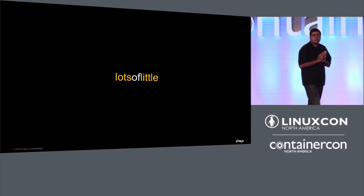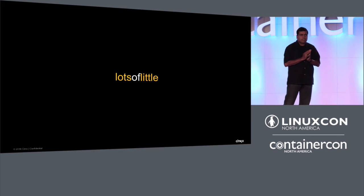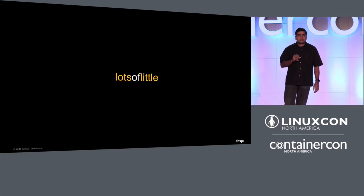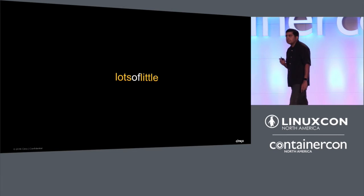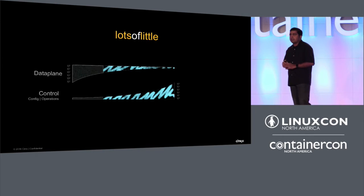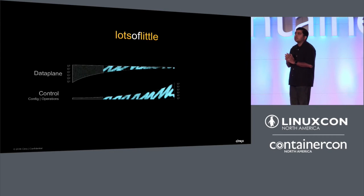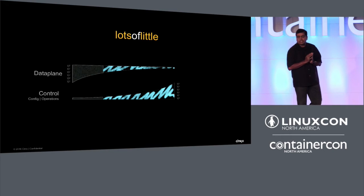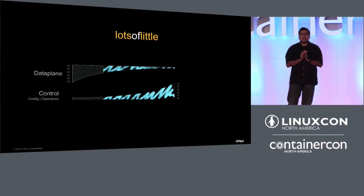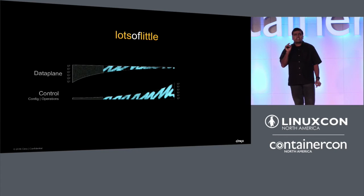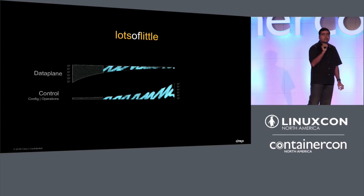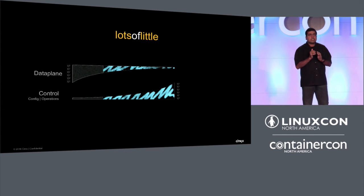Here I introduce the notion of what I call "lots of little." What does it mean for the network to be small and disaggregated? Instead of a few big boxes, you are now going to have a lot of little boxes. Here is a bit of an eye chart, but let me talk about it. I have two graphs — one of which is upside down — showing that the data plane of microservices is becoming smaller.